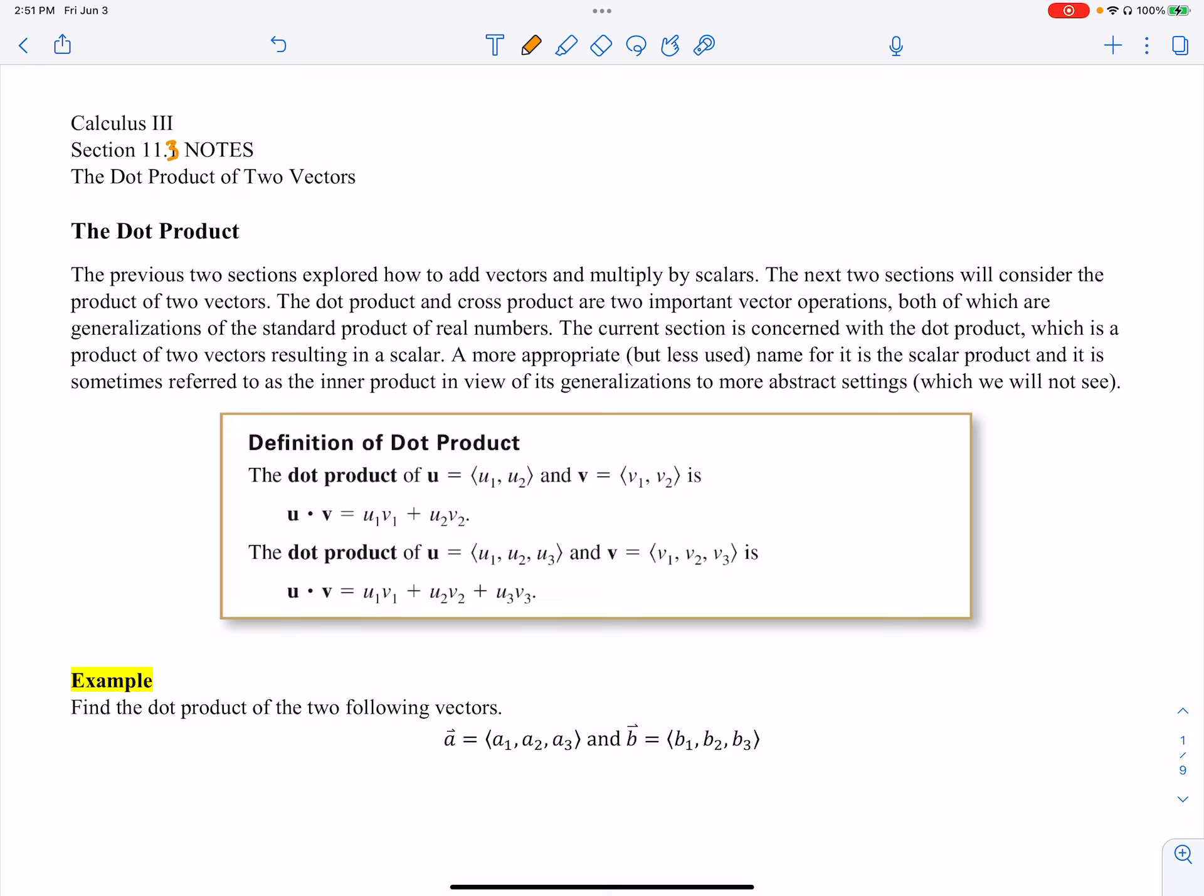All right, so in sections 11.1 and 11.2, we talked about vectors and stuff we could do with these vectors. We added the vectors, we subtracted the vectors. So the next natural question would be, what does multiplication look like for vectors?